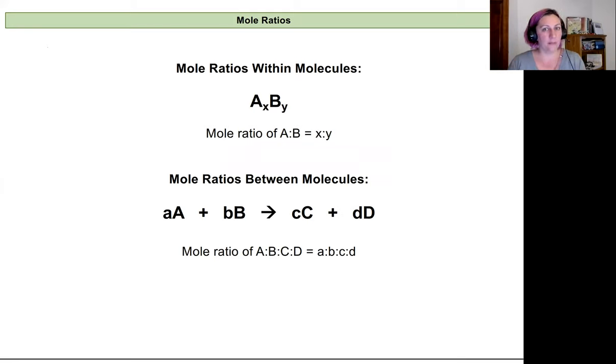Remember, moles tell us the number of molecules or atoms that we have in a mixture. Our reactions are based on those molecules colliding. So the number of molecules around, if they collide enough to form products, should predict the amount of products we have.